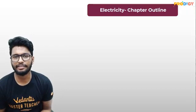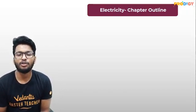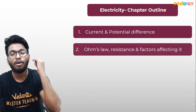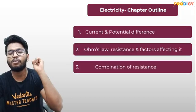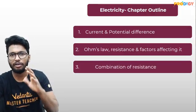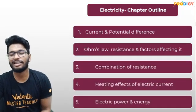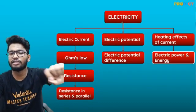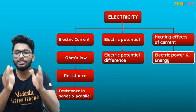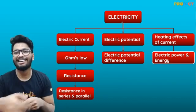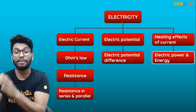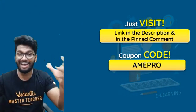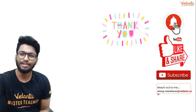Now let's talk about what we're going to study in 10th standard electricity. The chapter includes: current and potential difference, Ohm's law, resistance and factors affecting resistance, combinations of resistance in series and parallel, heating effect of electric current, and electric power and energy. We've divided this into sections — electric current, Ohm's law and resistance together; then potential and electric potential difference; then heating effect and electric power and energy. All these sessions are coming up soon on this channel, so make sure you subscribe!